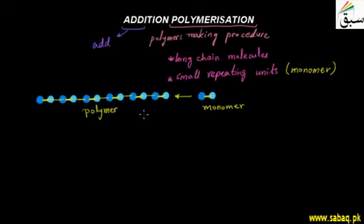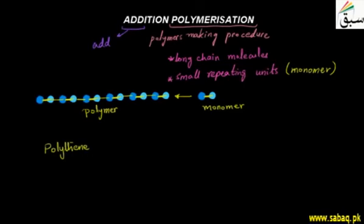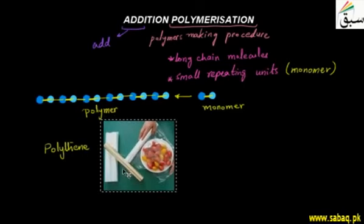A polymer is usually plastic — we can mold it. For example, we have polythene. Polythene bags and plastics have different uses. Polythene is used for plastic wraps and polythene shopping bags.